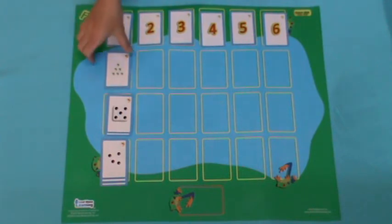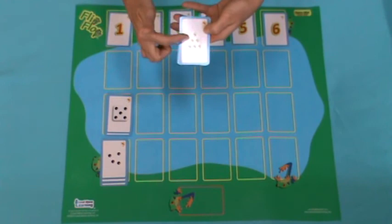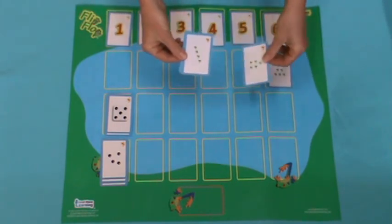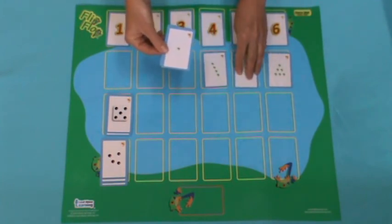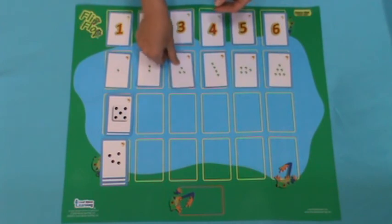Another student can take the next category, say it, and place it where it belongs. Six. Five. Four. One. Two. Three.